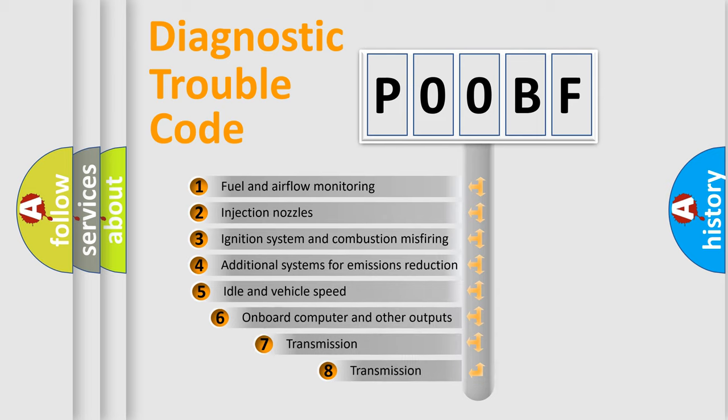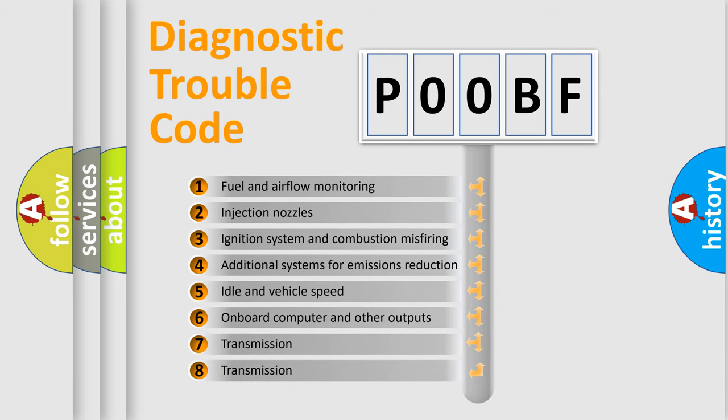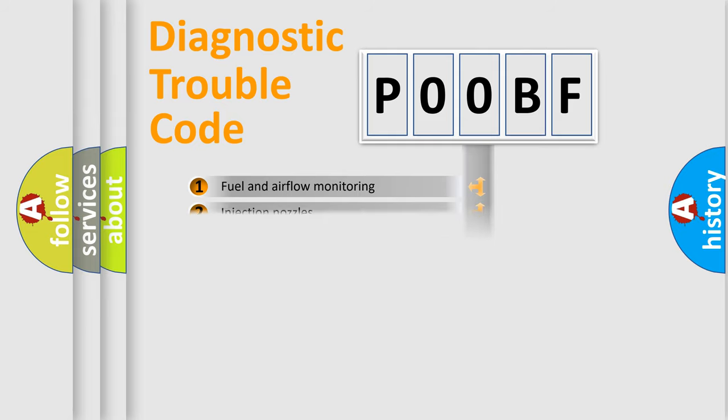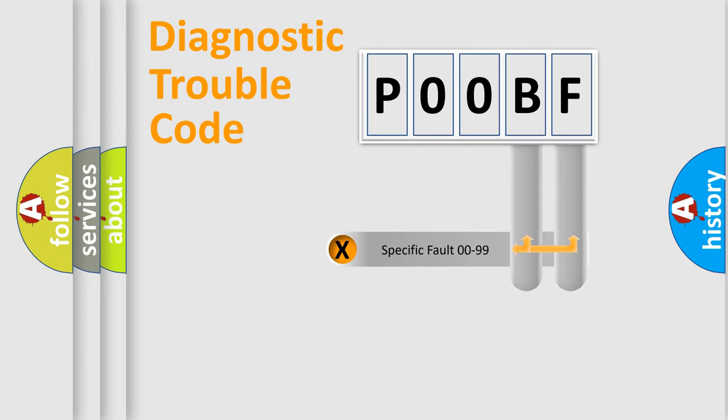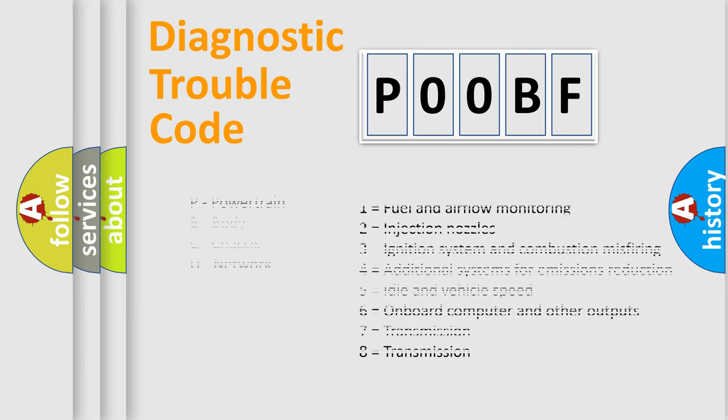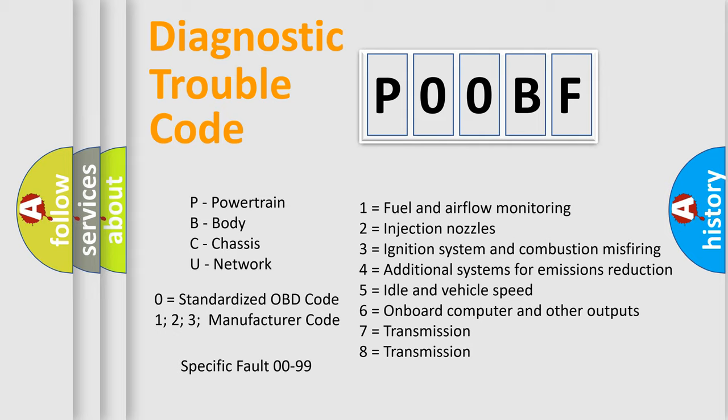The third character specifies a subset of errors. The distribution shown is valid only for the standardized DTC code. Only the last two characters define the specific fault of the group. Let's not forget that such a division is valid only if the second character code is expressed by the number zero.